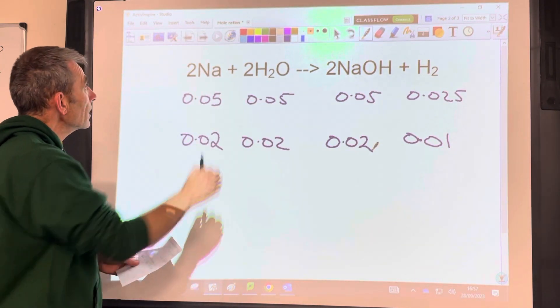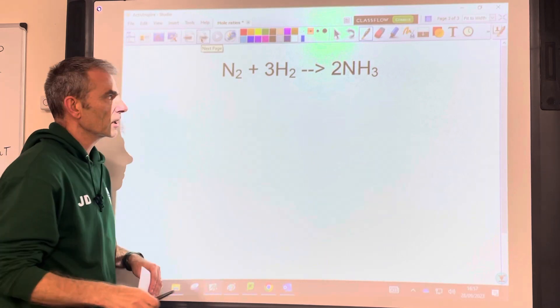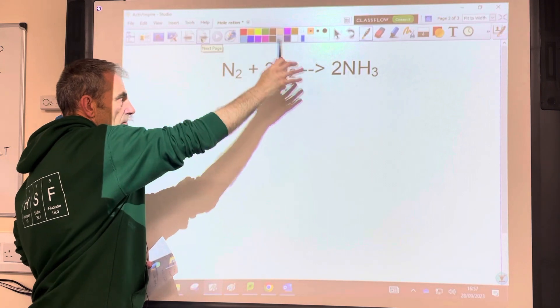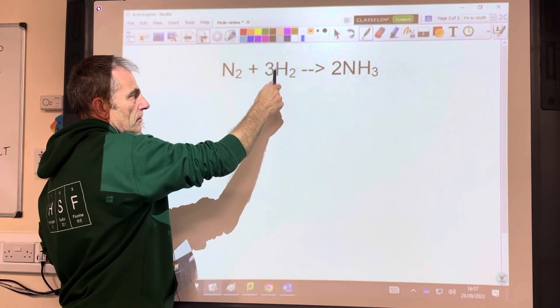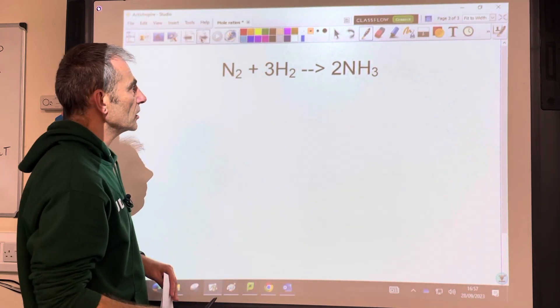And the final one is this one here. So it's got the most awkward ratio in it, I suppose, of the 3 that we're looking at. So the ratio is 1 mole of nitrogen reacts with 3 moles of hydrogen, and it makes 2 moles of NH3, which is ammonia.